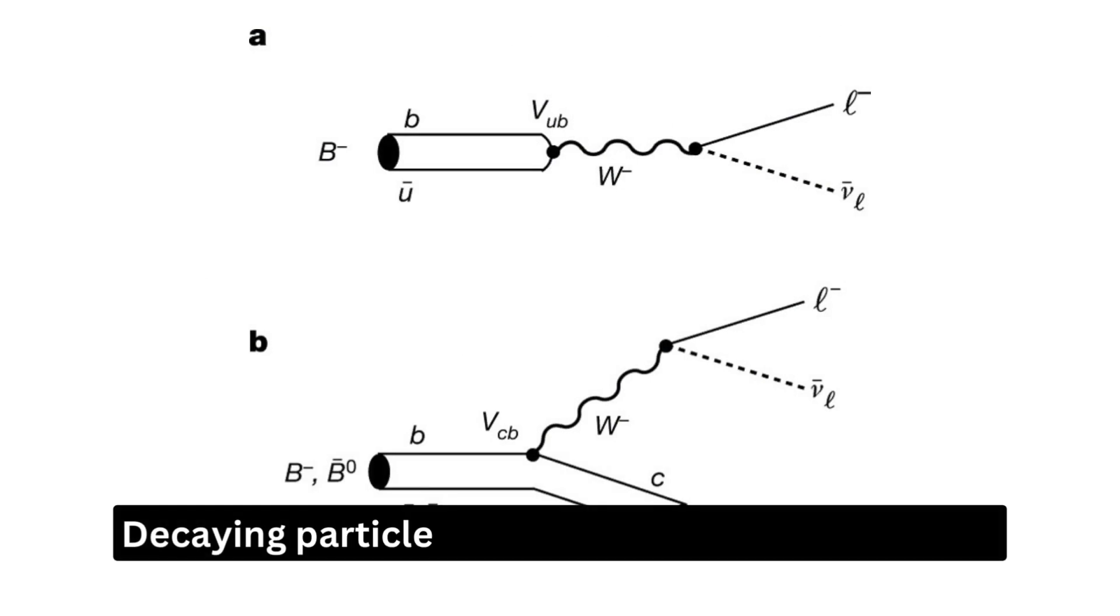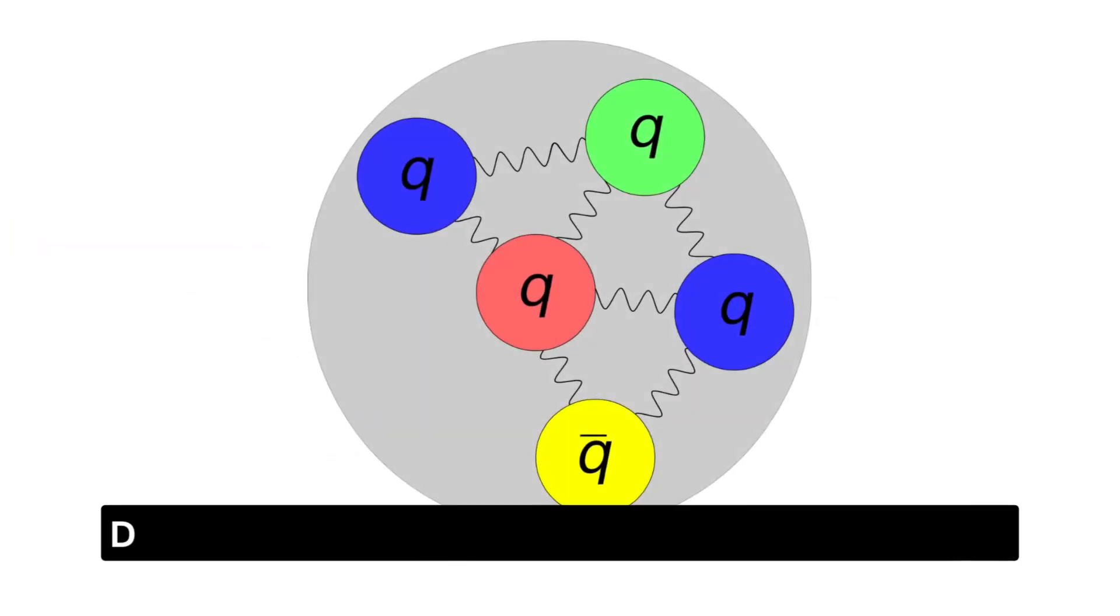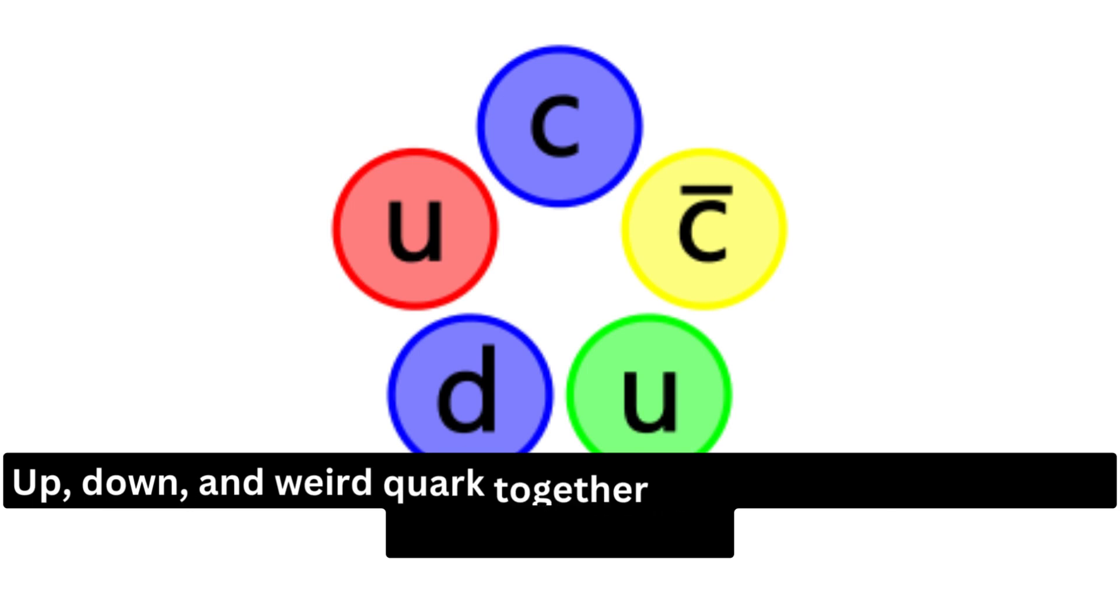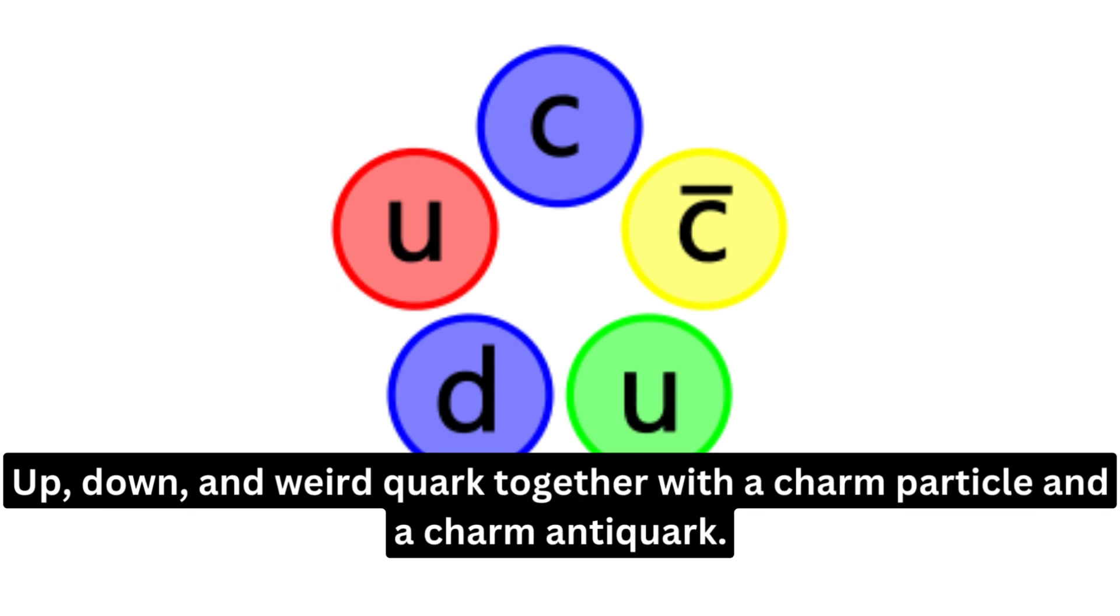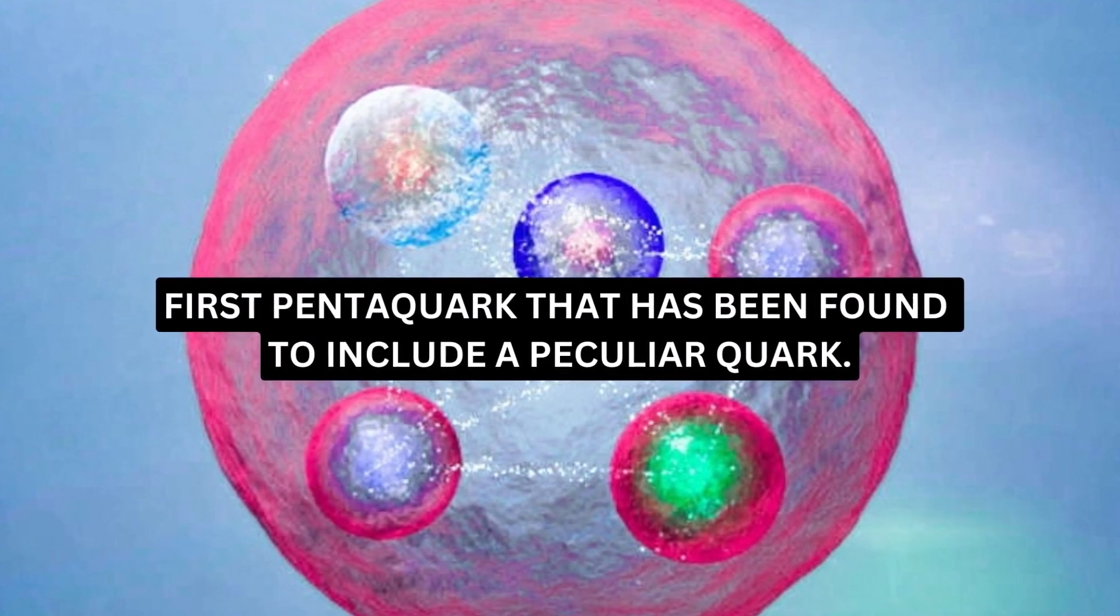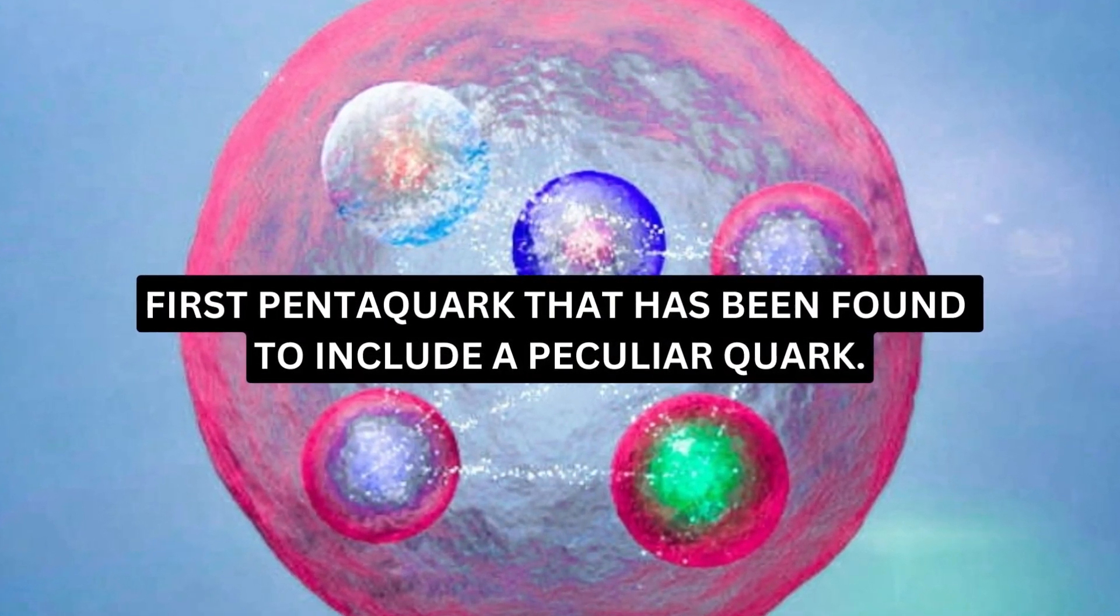The LHC team examined the decaying particles of negative charged B mesons and discovered proof for the presence of a pentaquark made of an up, down, and strange quark together with a charm particle and a charm anti-quark. It is the first pentaquark that has been found to include a strange quark.